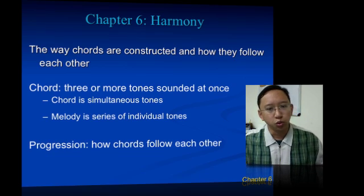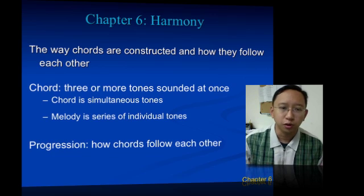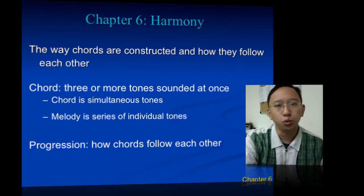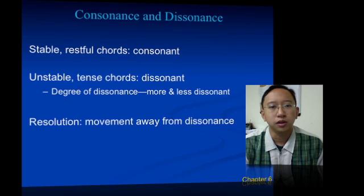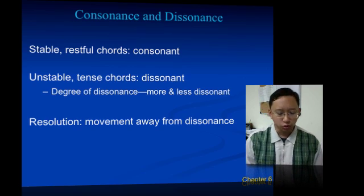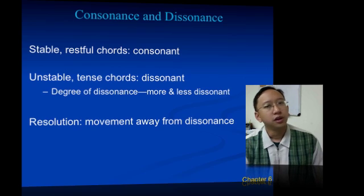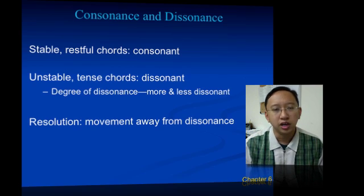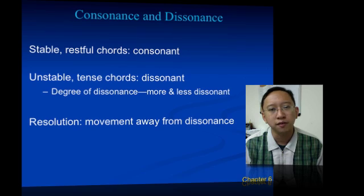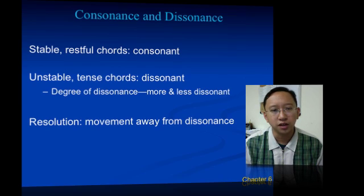The way that these groups of notes — chords — move together follows a progression, and our ears interpret that to determine what the music is expressing. There are instances of consonance and dissonance. Consonant chords are stable or restful chords that are pleasing to the ear. Throughout music history, the definition of what sounds consonant has evolved over the years — some things we consider consonant today, maybe a thousand years ago were not considered consonant at all.